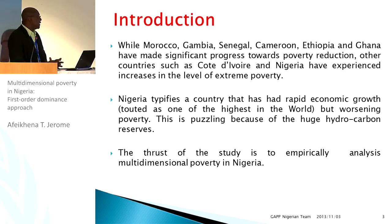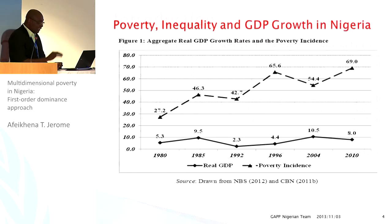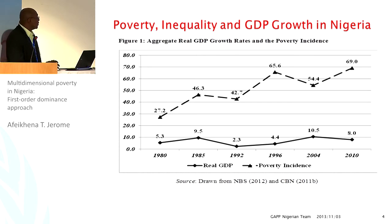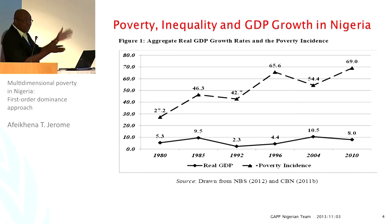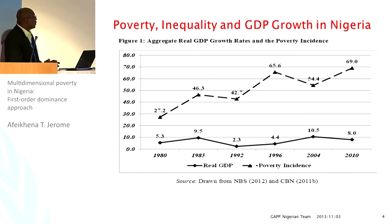So the thrust of this study is to empirically analyse multidimensional poverty in Nigeria. If you look at the growth rate — GDP growth rate and poverty incidence — they are moving in opposite directions. So we want to confirm or refute what is happening to poverty in Nigeria.